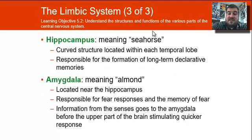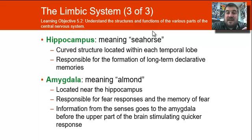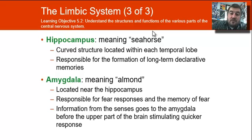The hippocampus means seahorse because it's shaped like a seahorse. It is a curved structure within each temporal lobe, and it's responsible for long-term memories. The amygdala is shaped like an almond — it is responsible for your fear responses and the memory of fear. Information from the senses goes to the amygdala before the upper part of the brain, which helps stimulate a quicker response to danger.